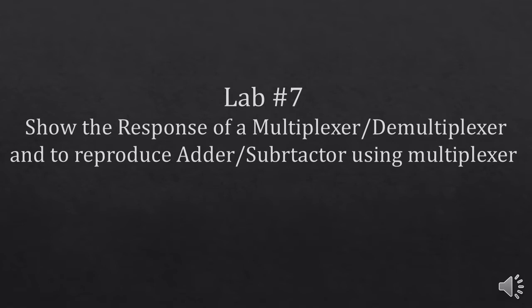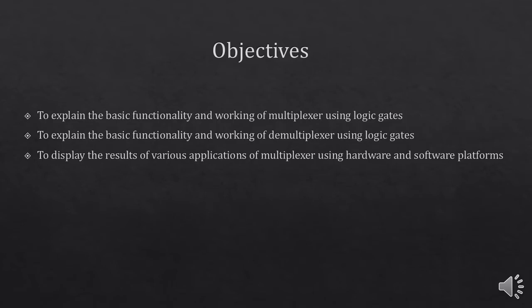Assalamualaikum. Lab number seven is to show the response of a multiplexer and demultiplexer, and reproduce the adder-subtractor using multiplexer. There are three objectives: to explain the basic functionality and working of a multiplexer using logic gates, to explain the functionality and working of a demultiplexer using logic gates, and to display the results of various applications of multiplexer using hardware and software platforms. In this lab you are only going to perform using the software.